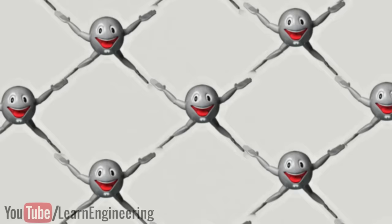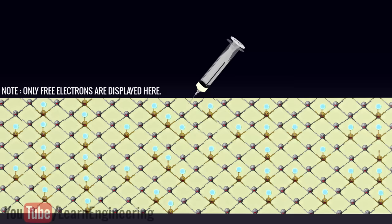Assume that phosphorus atoms with 5 valence electrons are injected into it. Here, one electron is free to move. In this structure, when the electrons get sufficient energy, they will move freely.